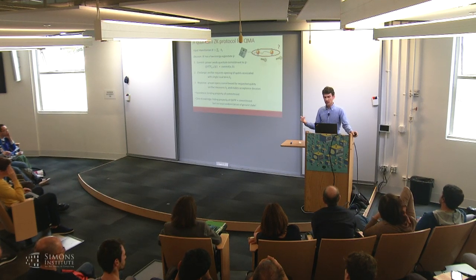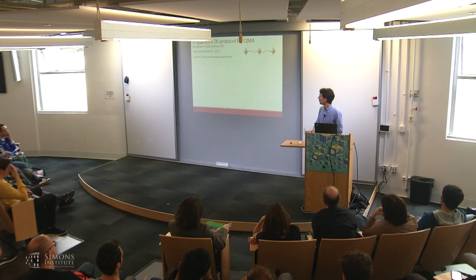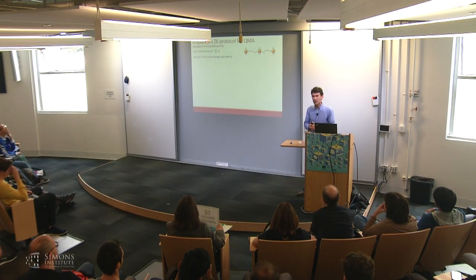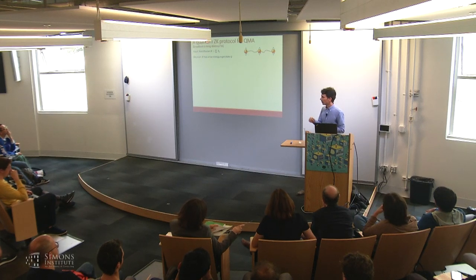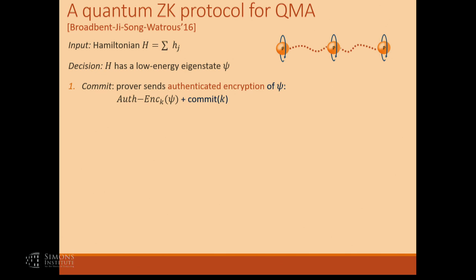Let's see how it can be done in the next slide. This is a protocol due to Broadbent, Ji, Song, and Watrous — 2016. We're going to take the attempt from the previous slide and fix it to recover the zero-knowledge property. There are going to be two changes. The most important one is that we're going to change the way this commitment works by adding a layer of authentication — instead of just encrypting the state, we're also going to authenticate it using a separate key, then commit to these classical keys.